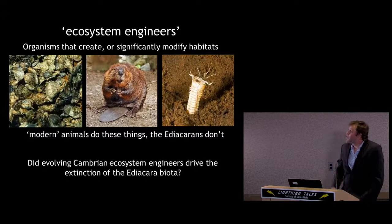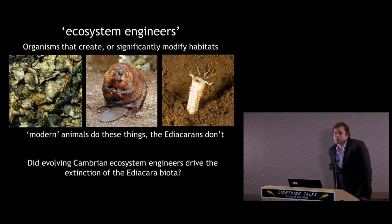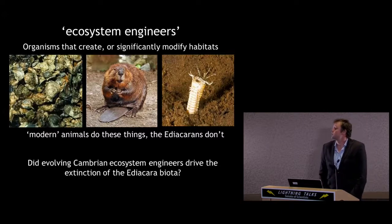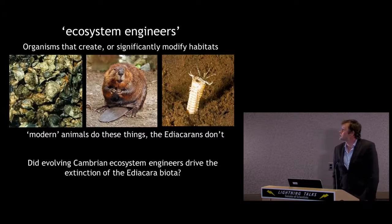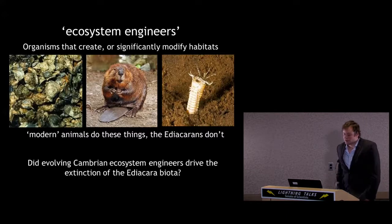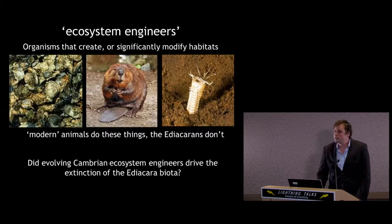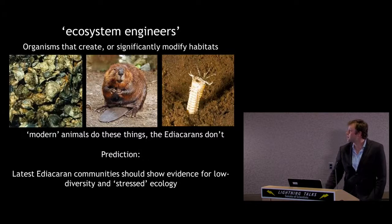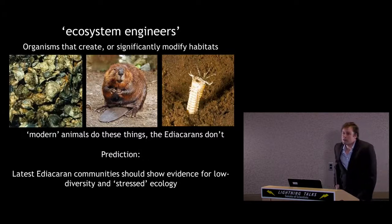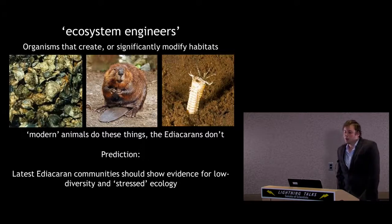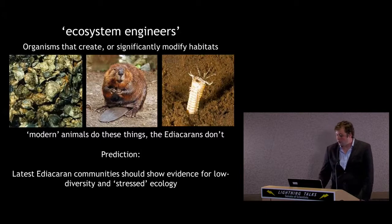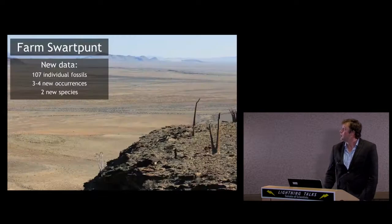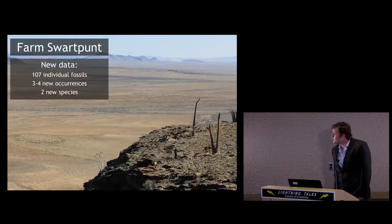So we're arriving at this hypothesis that perhaps evolving animals — evolving Cambrian-style ecosystem engineers — gradually marginalised the Ediacaran biota and drove their extinction. What's compelling about this hypothesis is that it comes with a very definite prediction: that these latest Ediacaran communities should show evidence for low diversity and some sort of stressed ecology. And that's what I've been investigating in southern Namibia.